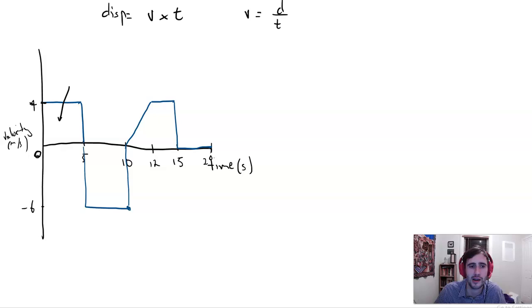So we can have a look here, our first section. We are going at a speed of four meters per second. And we do that for five seconds. Four times five, 20 meters. Easy math.